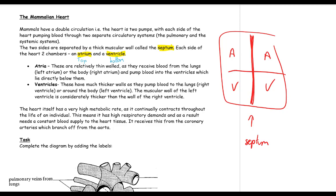The atria have very thin walls. They receive blood from the lungs if it's the left atrium, or from the body if it's the right atrium, and they only have to pump blood into the ventricles directly below them — so thin walls because they only pump blood a very short distance. The ventricles have a much thicker wall because they pump blood to the lungs if it's the right ventricle, or around the body if it's the left ventricle. The muscular wall of the left ventricle is considerably thicker than the wall of the right ventricle. The right ventricle only pumps blood a short distance and needs to create a low pressure to allow the most time for gas exchange, whereas the left ventricle needs to pump it further and generate a high pressure to deliver metabolites and maintain the blood-tissue fluid balance.